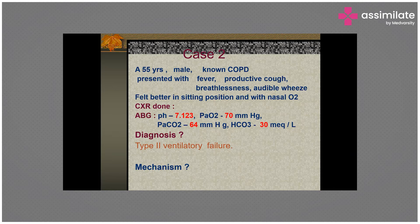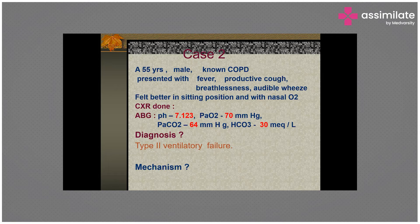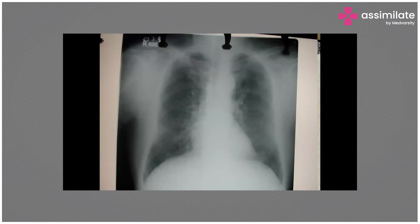In Type 2 respiratory failure, we see a peculiar increase in carbon dioxide levels. In which conditions do we see a rise in PCO2? Dr. Pavan has mentioned flow limitation, and reduced ventilation due to muscle fatigue — that is absolutely right.